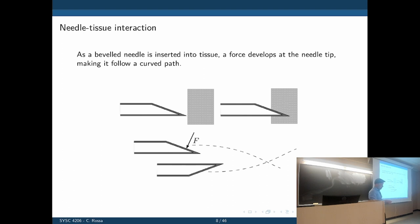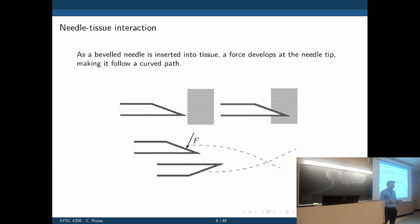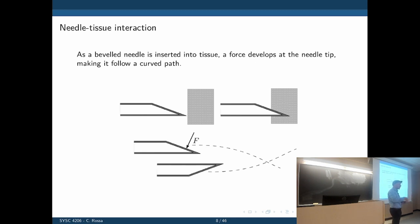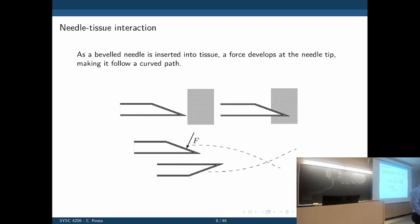This is both a problem and a solution. If you didn't have the bevel, you'd have no way to correct for deviations. But because you have the bevel, if you see the needle going downwards, you simply rotate it 180 degrees and make it go the other way. These are the exact needles used in the brachytherapy procedure I mentioned earlier.